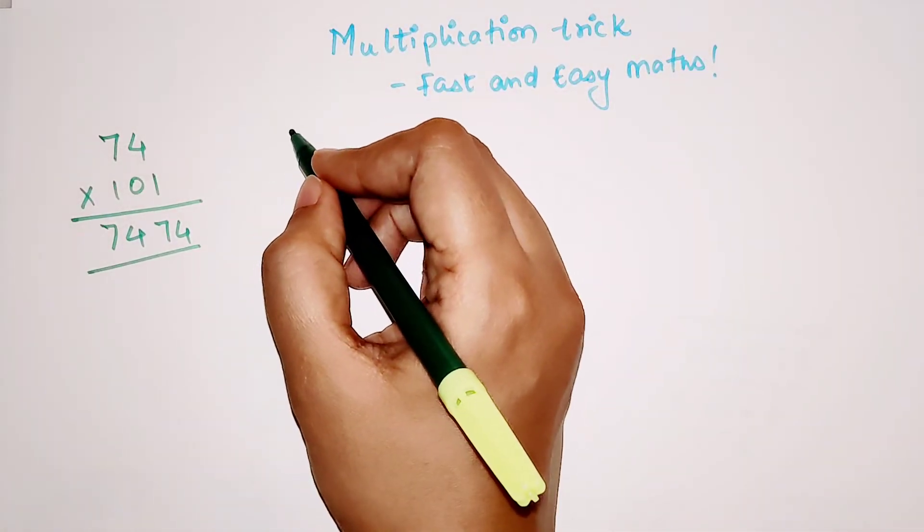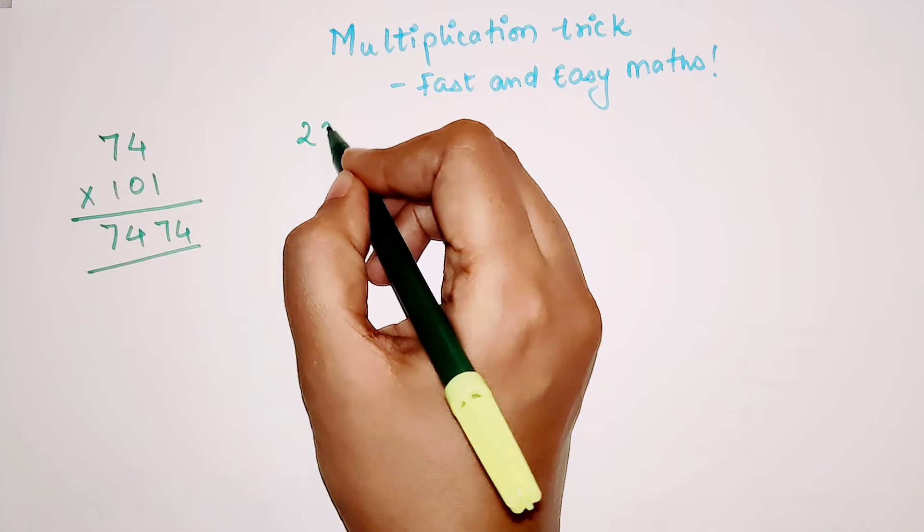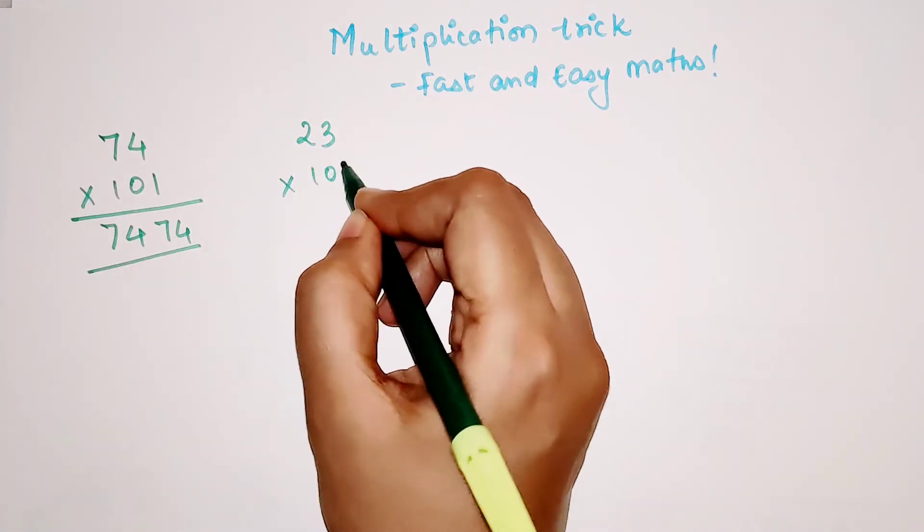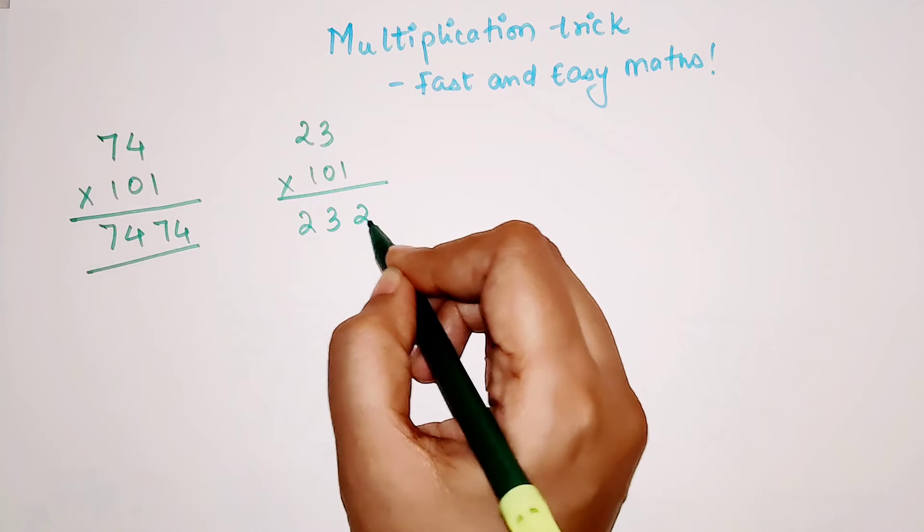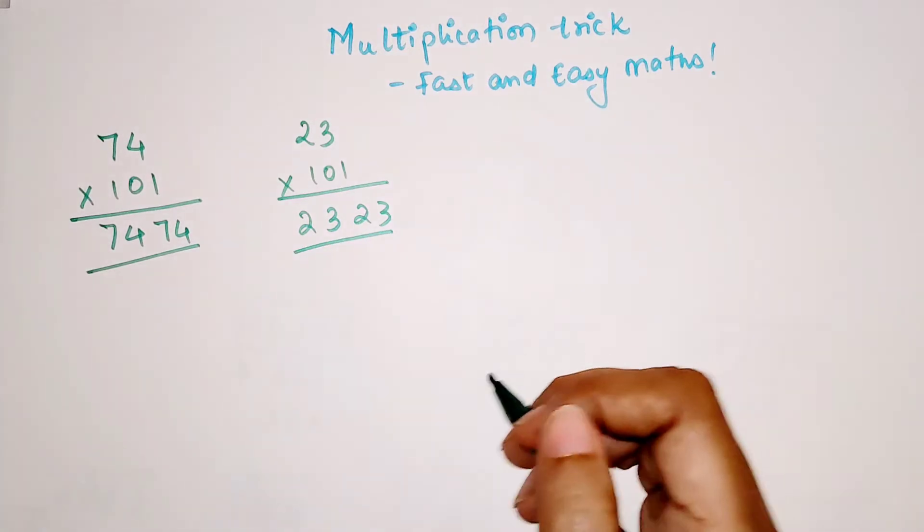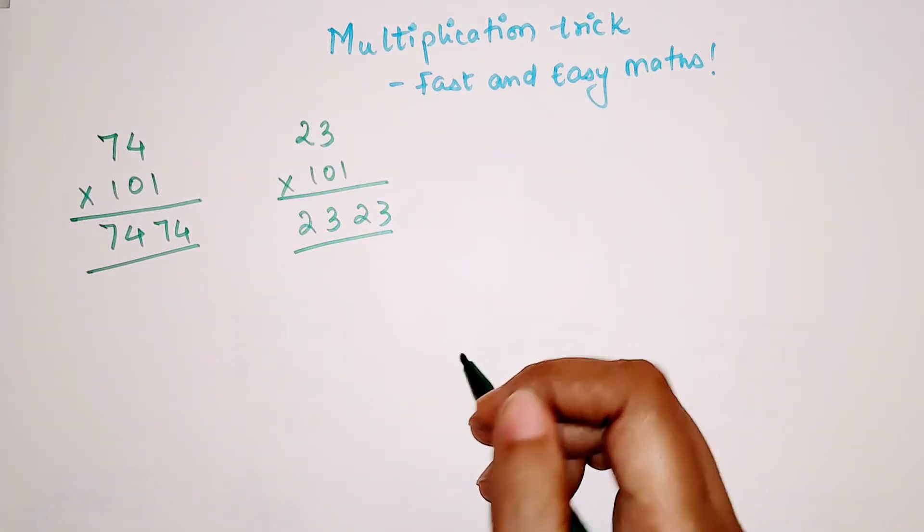Similarly, let's try one more. 23 into 101. Again the answer is 2323. If you have doubts you can use your calculator and check it out.